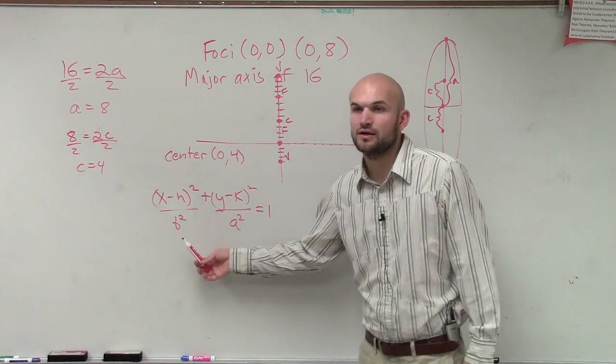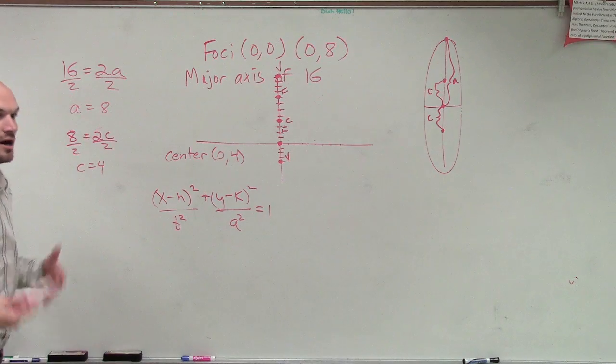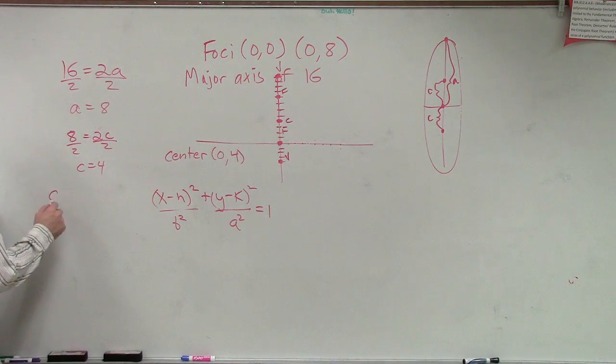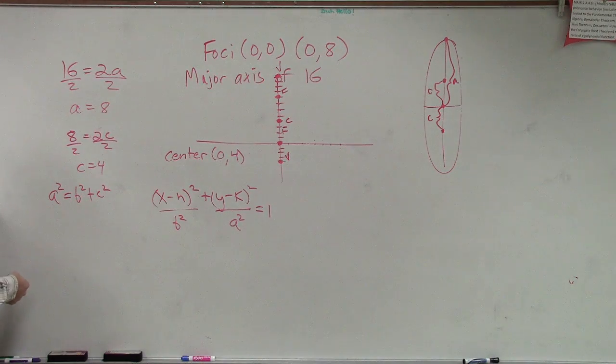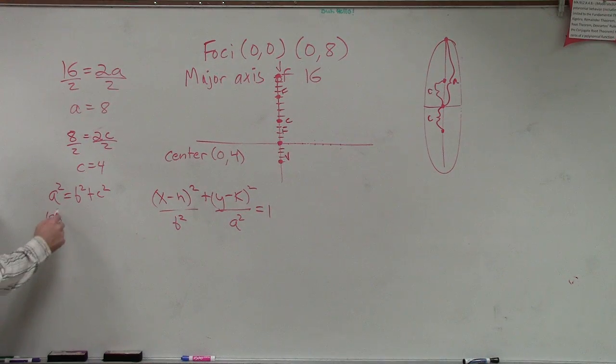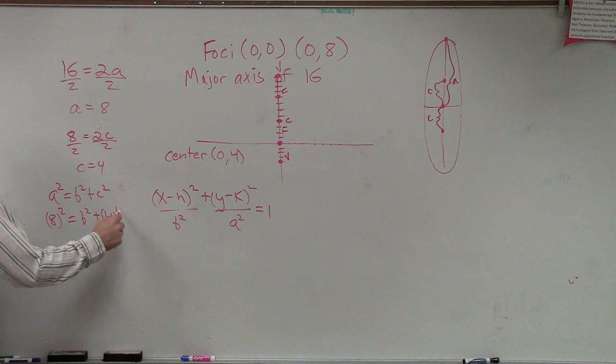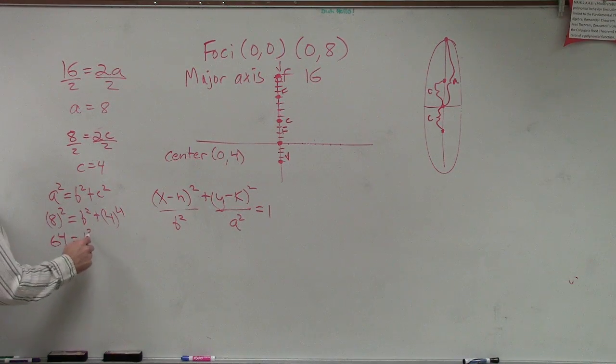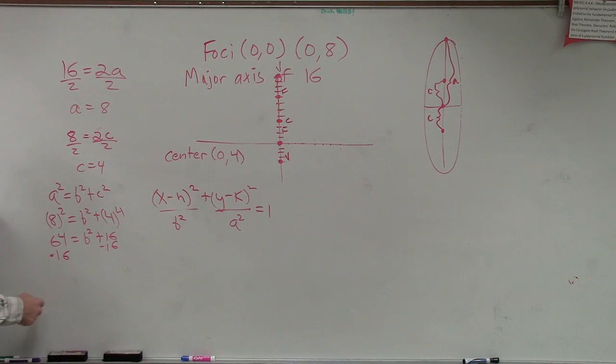And, one last piece of information we need to figure out, though, is we don't know what B is, do we? But, we now know what A and C are. And, we talked about the relationship between A and C. It's going to be A squared equals B squared plus C squared. Right? So, therefore, we could say 8 squared equals B squared plus 4 squared. So, therefore, we have 64 equals B squared plus 16, minus 16. And, therefore, we're going to have 48 equals B squared.